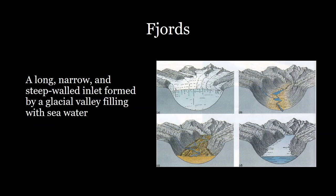Usually when you have a tidewater glacier — a glacier that terminates in the ocean — and that glacier then recedes, part of that glacial valley will be below sea level and will be filled with water. Additionally, when you have a large number of glaciers retreating, you have sea level rise just as we see with climate change. As sea level rises, more of that glacial valley can be filled with water, and repeated erosional events from lots of glaciers can mean large portions of that valley are filled.